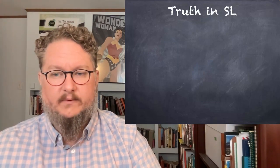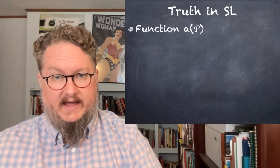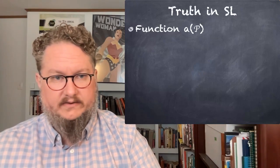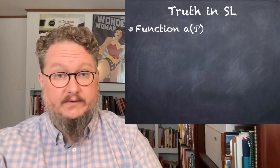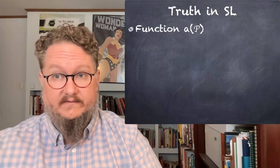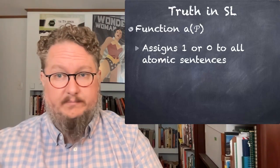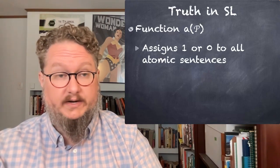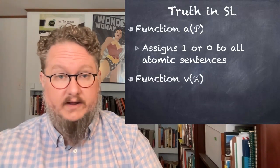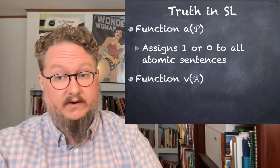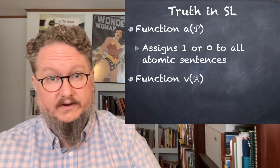We're going to give a formal definition of truth in SL as a sort of precursor. First, we start with a function A — A of P, where P is a statement of SL. We call this function a truth value assignment. It specifies the state of the world by assigning a one or a zero to atomic sentences. Any atomic sentence you input into this function gives you a one or a zero. Then we specify a second function V, which takes not just an atomic sentence but any sentence in SL whatsoever. Function V we call a truth function — it gives the interpretation of complex sentences in relation to their component parts, and depends on function A for atomic sentences.